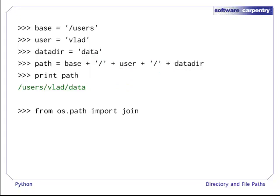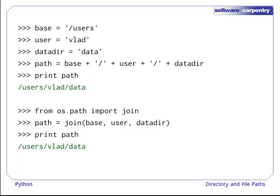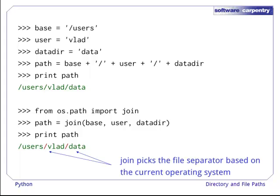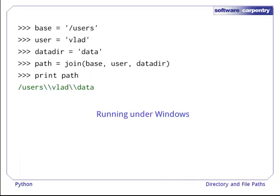Python provides a join function in its OSPath module, which means we don't have to worry about file separators. Join is one of those useful functions that takes two or more arguments. Join picks a file separator based upon what it knows to be the current operating system. And if we ran this on Windows, this is what we would get.